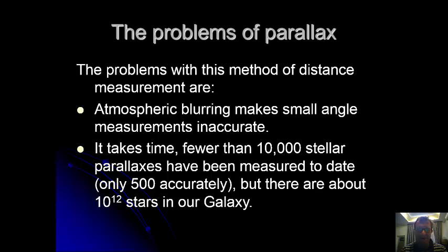And it takes time. You need to make measurements across a whole year, so fewer than 10,000 stellar parallaxes have been measured to date, only about 500 accurately, and there's about 10 to the 12 stars in our galaxy. So it's a good method as a starting point, and I will introduce some more methods later on in the unit.